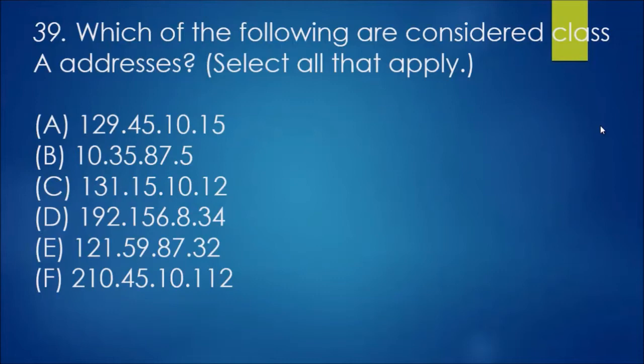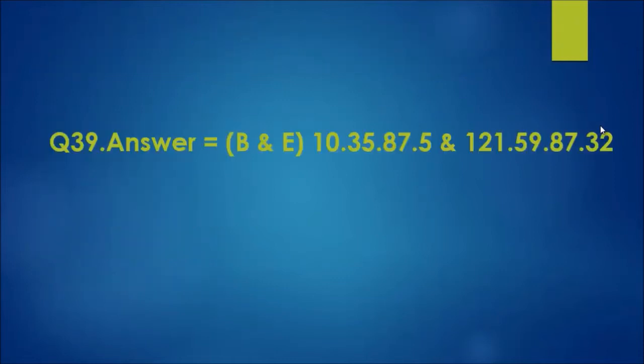If we have a look, class A is between 1 and 127. If we have a look, we have found that B and F, sorry B and E, are between those ranges and that's the answer.